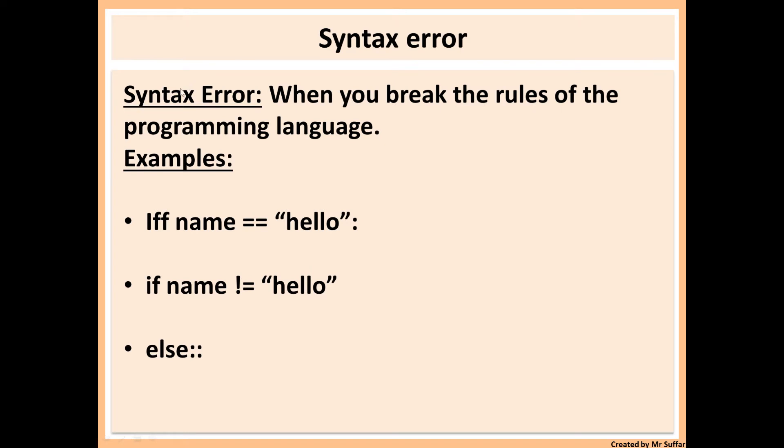First one is called syntax error. This is when you break the rules of the programming language. For example, you might make a mistake in the spelling or you miss a colon or you miss a bracket. In the first example we have if name is equal to hello. We can clearly see I've typed the letter f twice, so this is breaking the rule of language because I'm misspelling if, which is a syntax error.